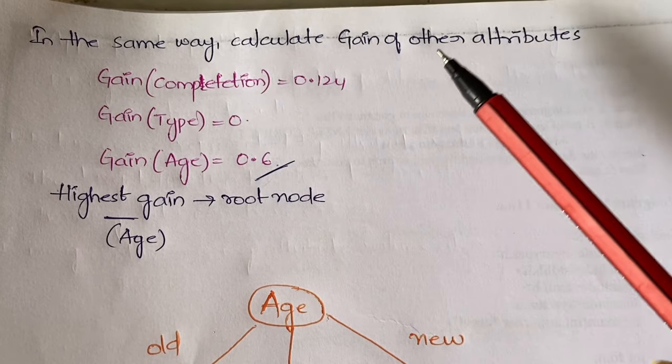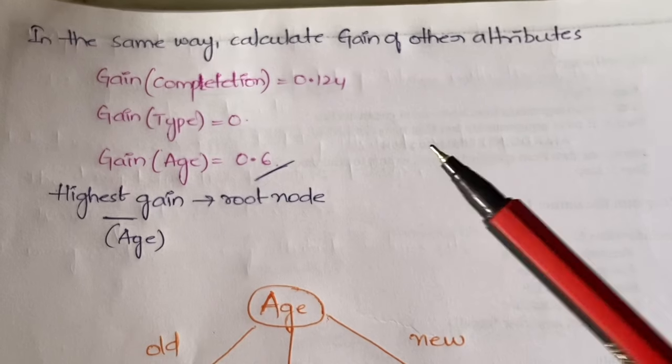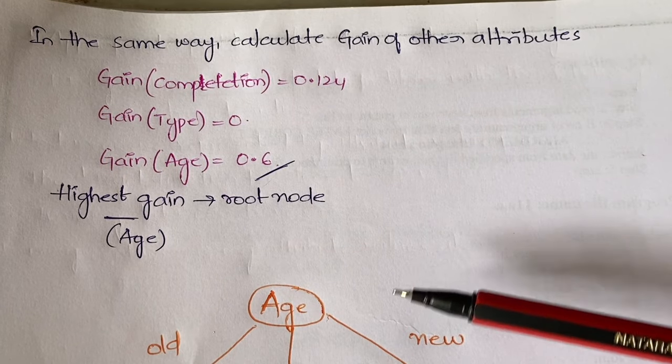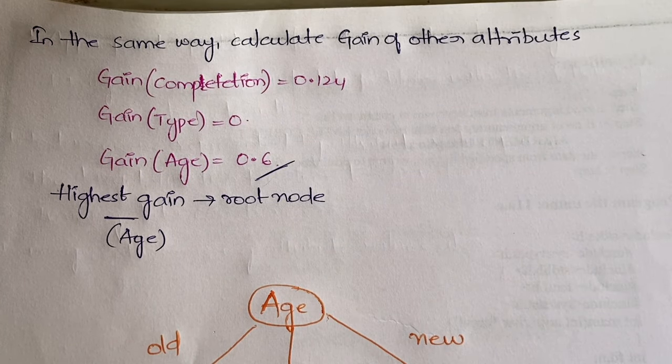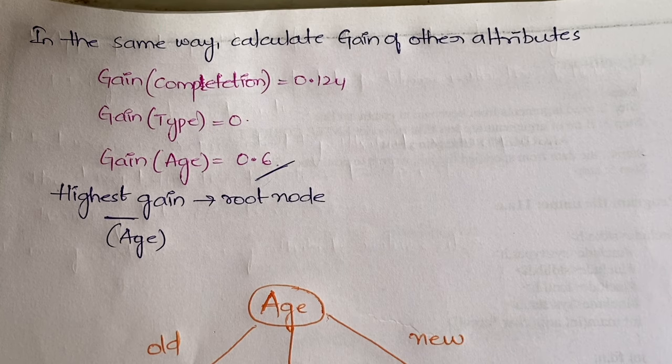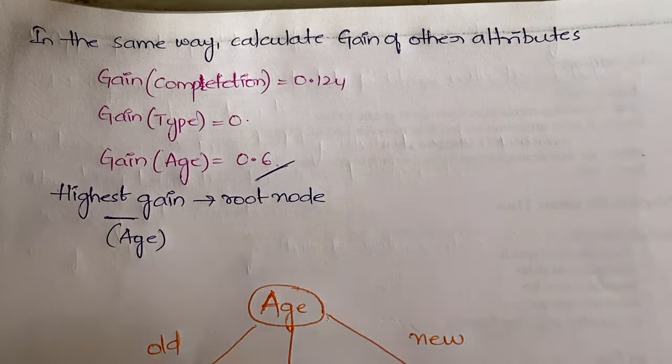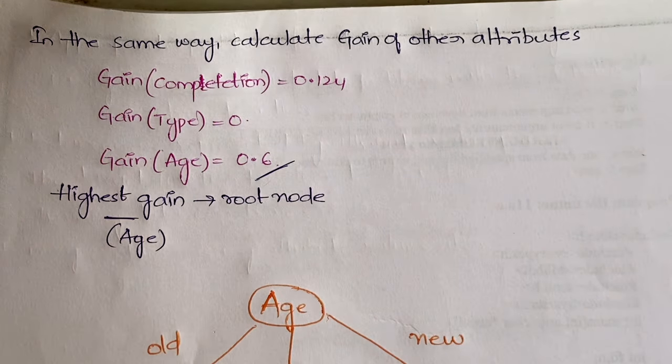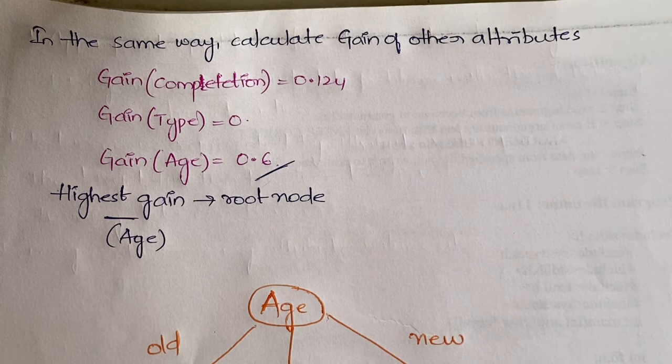After you get the gain of each non-target attribute, you have to start constructing the decision tree. How do you construct it? You need to first choose the root node or decision node.